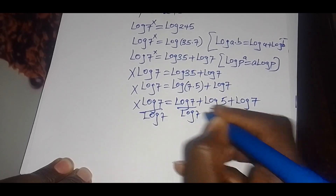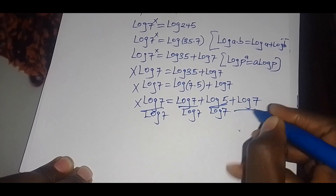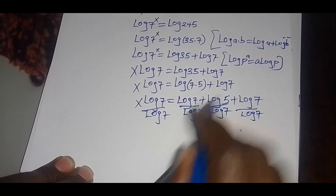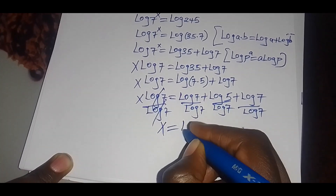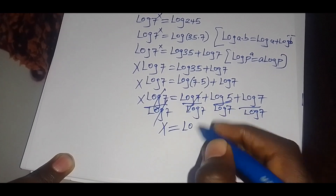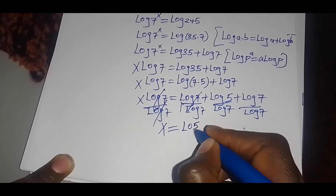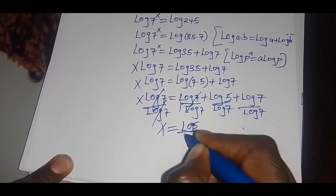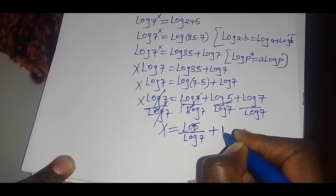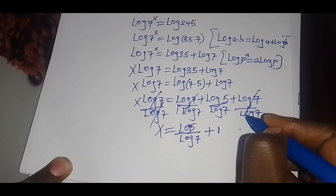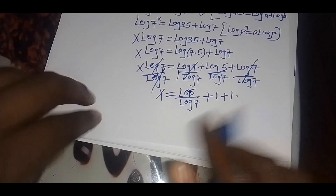Then we divide both sides by log(7). So we simplify: x equals log(7)/log(7) plus log(5)/log(7) plus log(7)/log(7), which gives us 1 plus log(5)/log(7) plus 1.